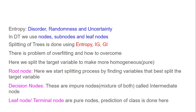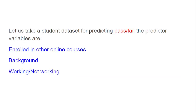Decision nodes are impure nodes — a mixture of both pass and fail — and are also called intermediate nodes. Finally, the leaf node or terminal node contains pure nodes where the prediction of class is done. This is the basic principle.